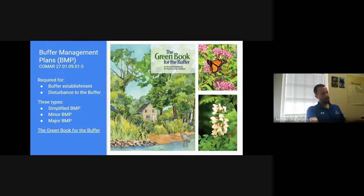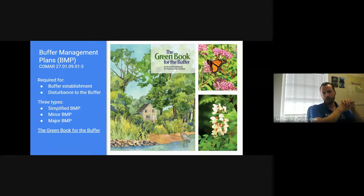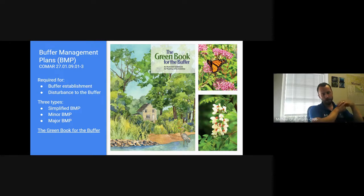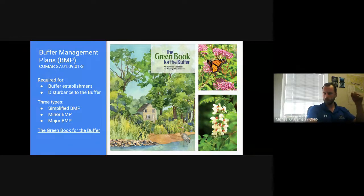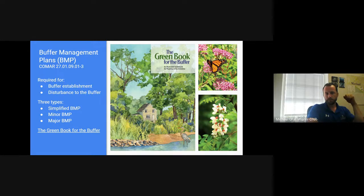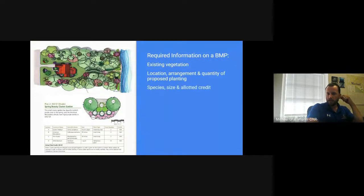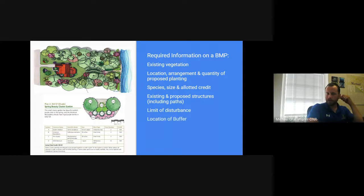Buffer management plans are required for buffer establishment or any kind of disturbance of the buffer. There are three basic types: a simplified BMP, a minor BMP, and a major BMP. The green book for the buffer is available on our website and is an excellent resource for all things buffer-related. I strongly recommend downloading it — it answers a lot of questions and can be a great resource for citizens as well. The plan should include a schematic for a landscaping plan and a table breaking down species count, scientific name, size, and planting type.